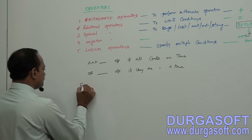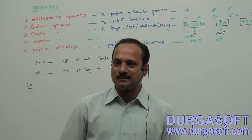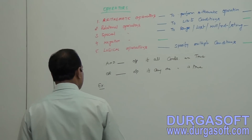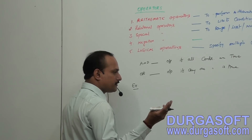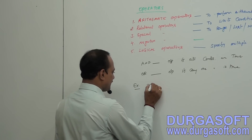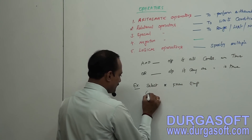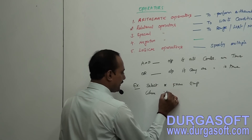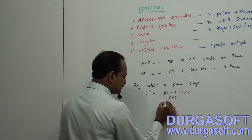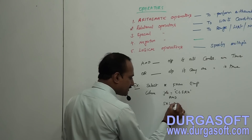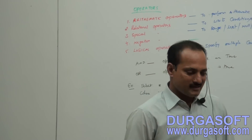Example: Display clerk details with minimum salary 1100. You are looking for two conditions — job equals clerk, and salary is at least 1100. The query is: SELECT * FROM emp WHERE job = 'CLERK' AND sal >= 1100. Minimum 1100, maximum anything — no problem.